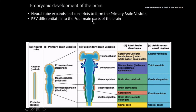The neural tube is going to start to expand and constrict to form primary brain vesicles, and then they're going to differentiate into the four main parts of the brain. The neural tube gives rise to the forebrain, midbrain, and hindbrain, which then give rise to the telencephalon, diencephalon, mesencephalon, metencephalon, and myelencephalon, and ultimately the spinal cord.